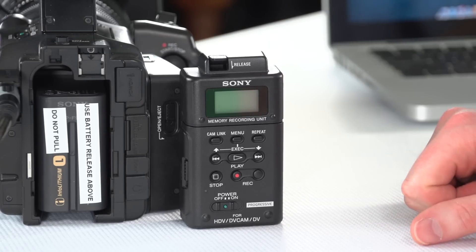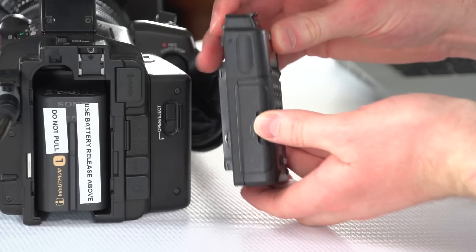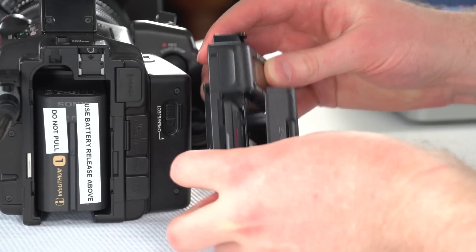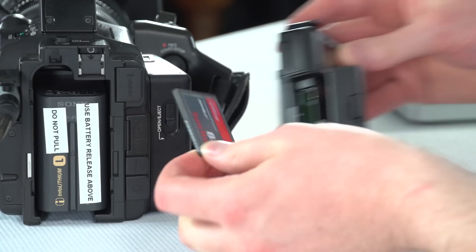So the device itself is pretty straightforward. It uses a CF memory card, so if you pop it open you can see it there and we can eject the card like so. We've just got a little 8 gig in there at the moment.